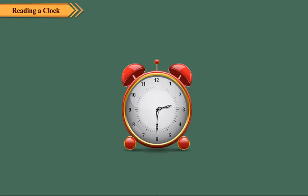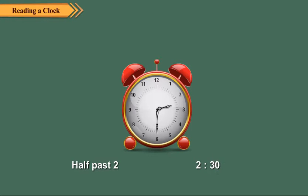Now, observe this clock. Here, the hour hand is halfway between 2 and 3. The minute hand is at 6. So, the time is 30 minutes after 2. We write it as half past 2 or 2.30. So, when the minute hand is at 6, the time is half past the hour.